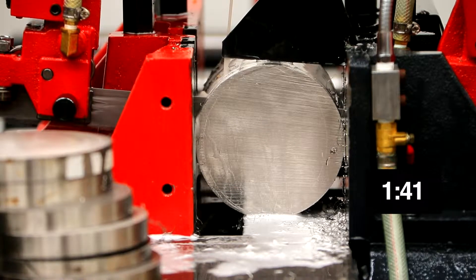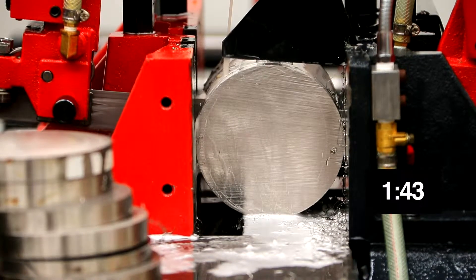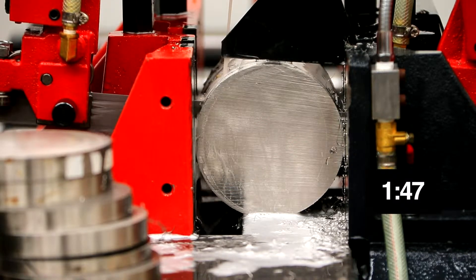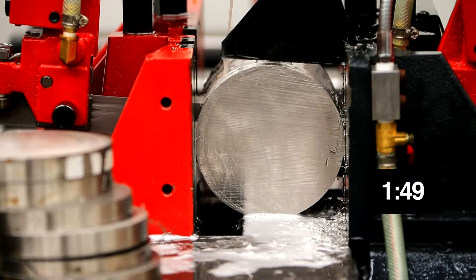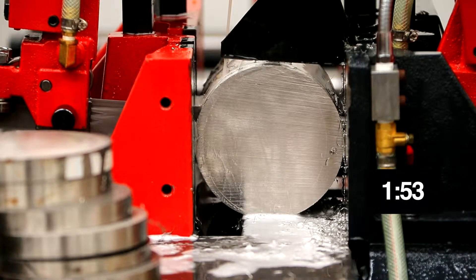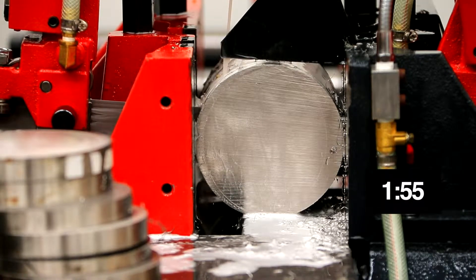When you're running our carbide tip bandsaw blade, you typically will run the blade speed 20% faster depending on the material you're cutting. The cutting fluid that we're using today is our AF2000 sawing fluid. This is a water-soluble cutting fluid.